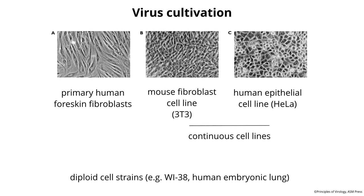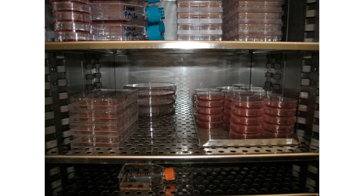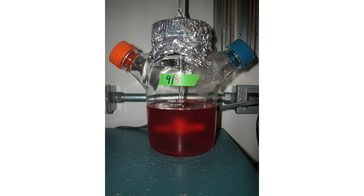Cell lines and primary cells are grown in a variety of containers — plastic dishes, plates, six-well plates, flasks — in an incubator at 37 degrees centigrade with 5% CO2 atmosphere, which buffers the medium as cells grow and it becomes acidified. For large volumes of cells, you can use a spinner flask, which has a magnet that spins to keep cells suspended in very dense cultures. Not every cell line will grow in a spinner.